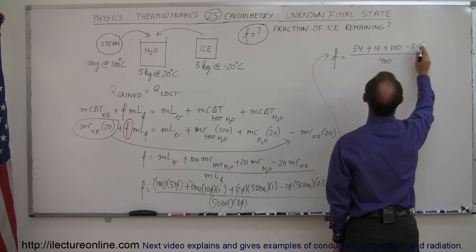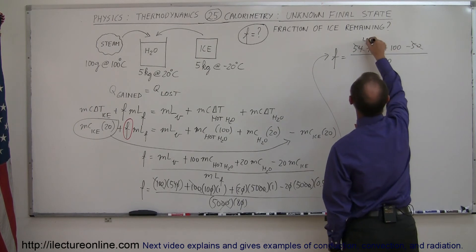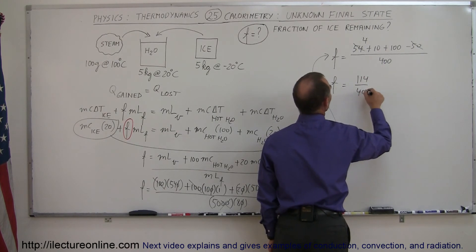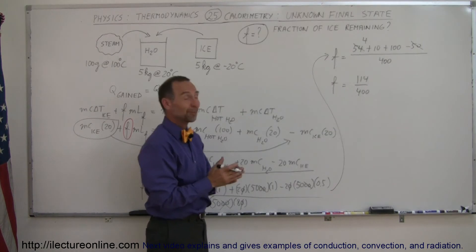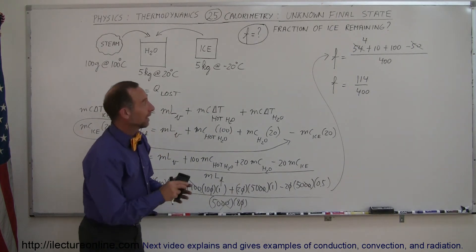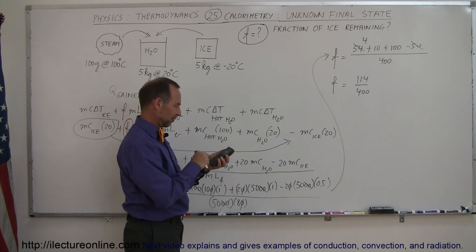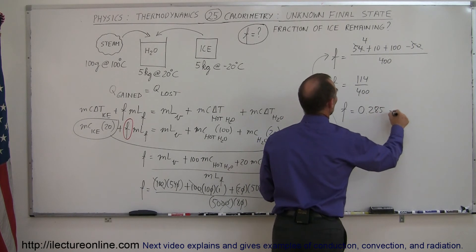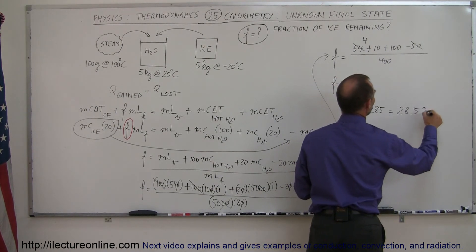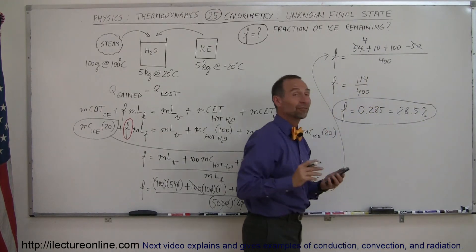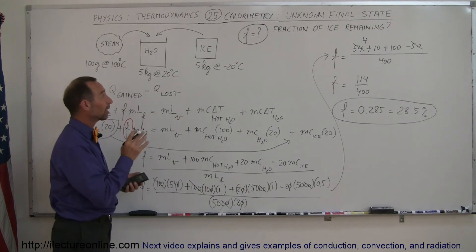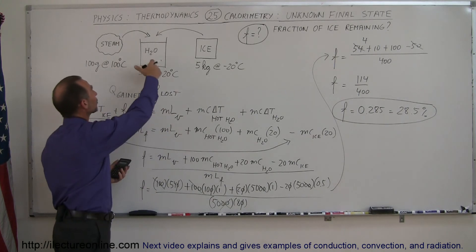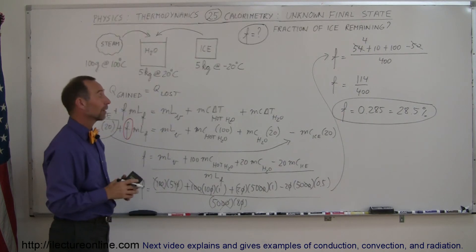54 minus 50 equals 4, so the numerator becomes 4 plus 10 plus 100 minus 0 — working it out gives 114. So the fraction f equals 114 divided by 400. That's a good sign because it's between 0 and 1, confirming our assumption was correct. Therefore f equals 0.285, or 28.5%. That means 28.5% of that block of ice will have melted; the rest remains as ice at 0 degrees centigrade, floating in water at 0 degrees centigrade.